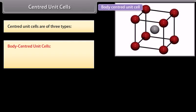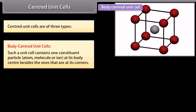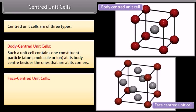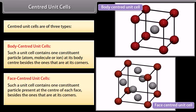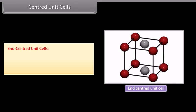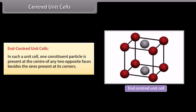Centered Unit Cells are of three types: Body Centered Unit Cells - Such a Unit Cell contains one constituent particle (atom, molecule or ion) at its body center besides the ones that are at its corners. Face Centered Unit Cells - Such a Unit Cell contains one constituent particle present at the center of each face besides the ones that are at its corners. End Centered Unit Cells - In such a Unit Cell, one constituent particle is present at the center of any two opposite faces besides the ones present at its corners.